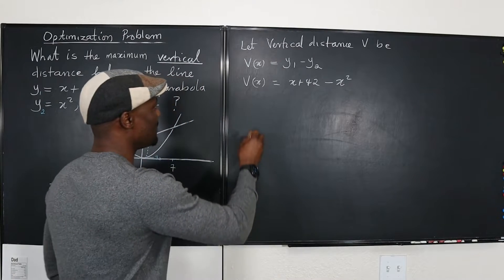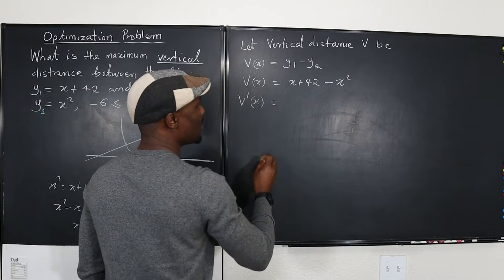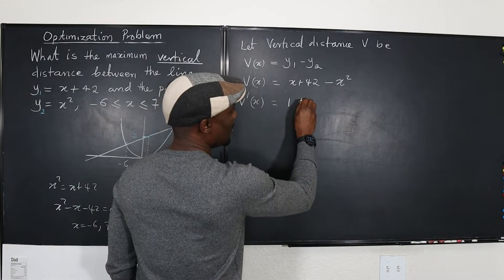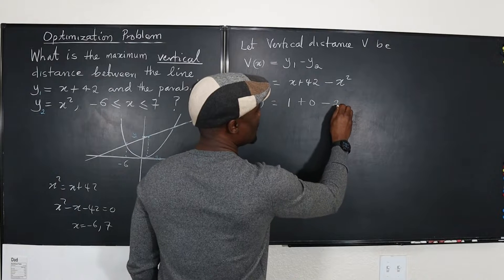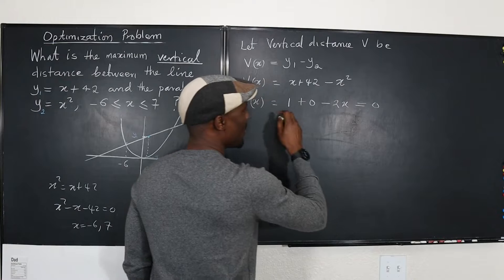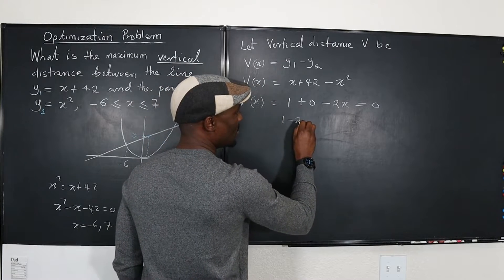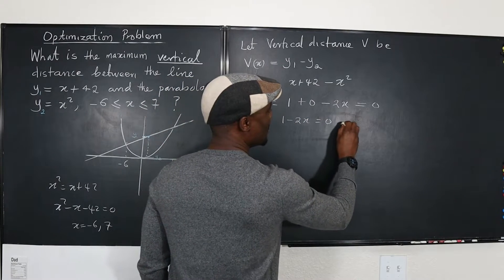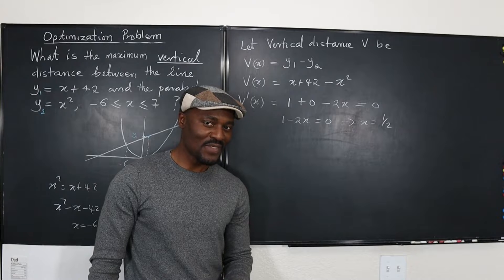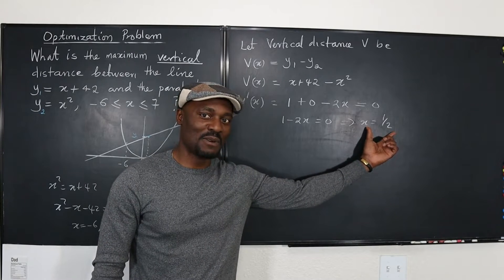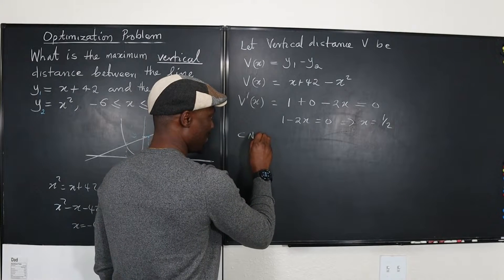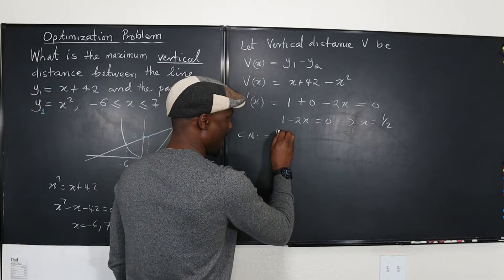Let's take the derivative of V(x). V prime of x is going to be the derivative of (x plus 42 minus x squared), which gives 1 minus 2x. Setting the derivative equal to zero: one minus two x equals zero, which implies x equals one half. So we need to be sure that this is a maximum point and not a minimum point — this is our critical number: x equals one half.